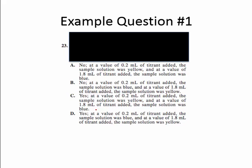Our two rationale options are: first, at a value of 0.2 milliliters of titrin added, the sample solution was yellow, and at 1.8 milliliters of titrin added, the sample solution was blue. The second rationale, which appears in answer choice B, switches it: at 0.2 milliliters of titrin added, the sample solution was blue, and at 1.8 milliliters, the sample solution was yellow. These rationales are mixed and matched with the yeses and nos — A and C share the yellow/blue pairing, and B and D share the blue/yellow pairing.